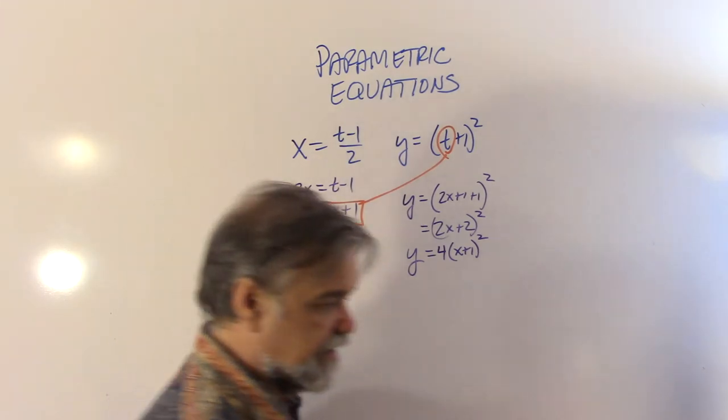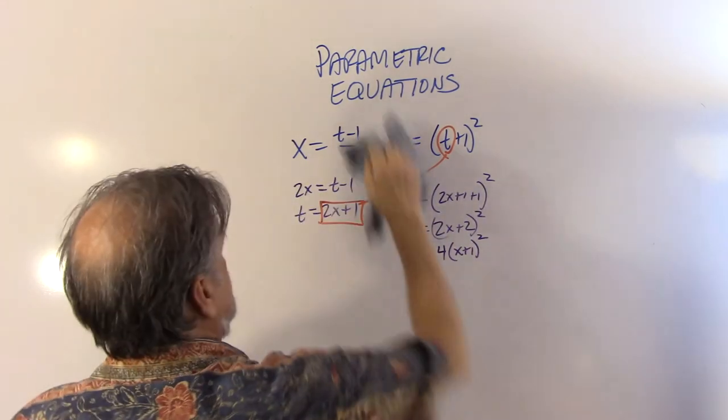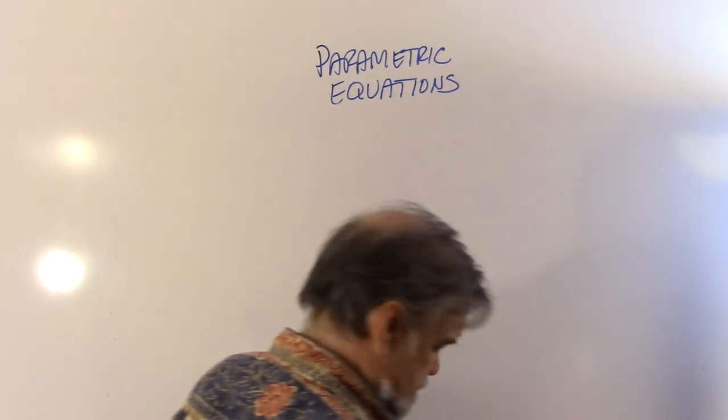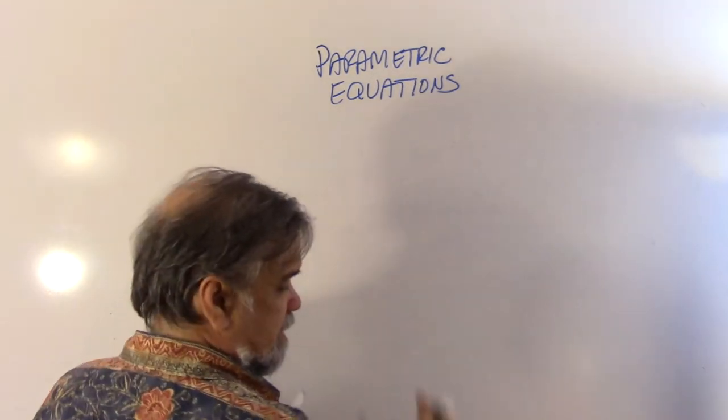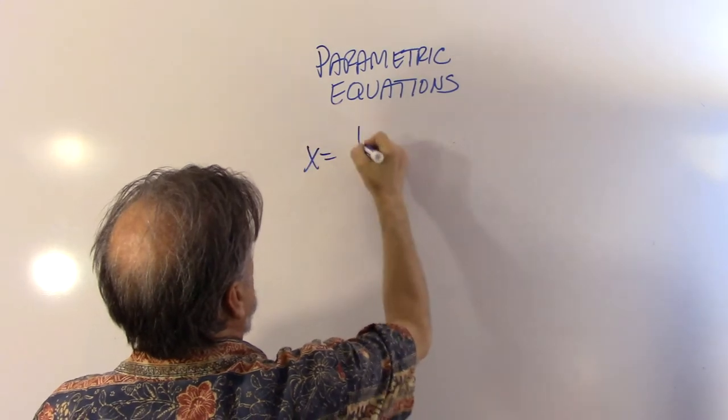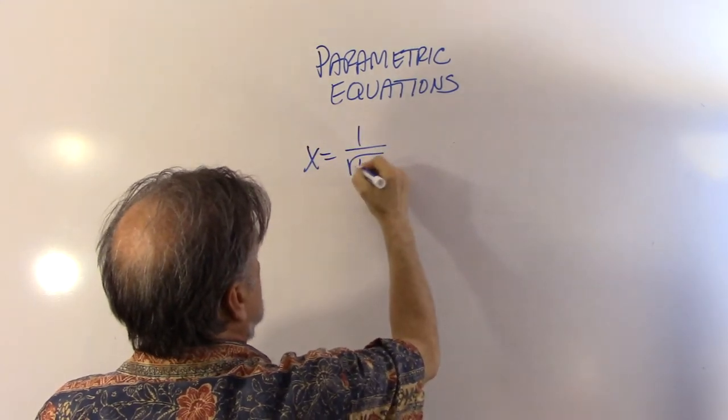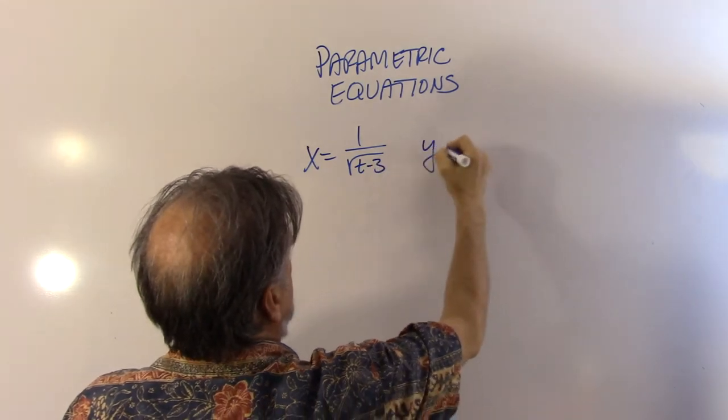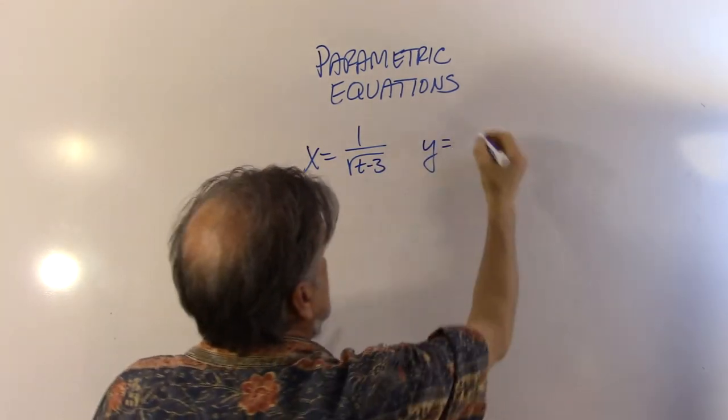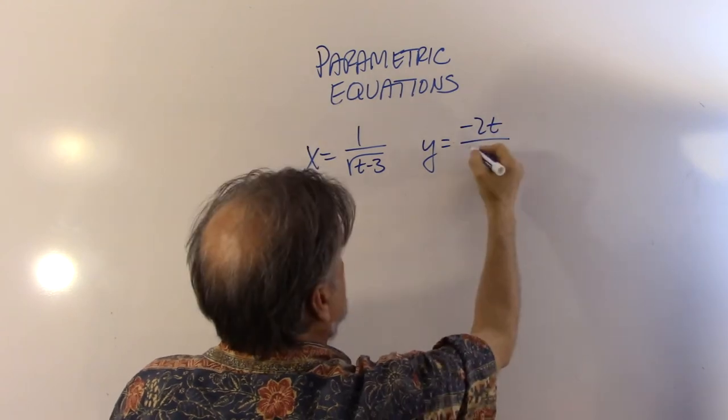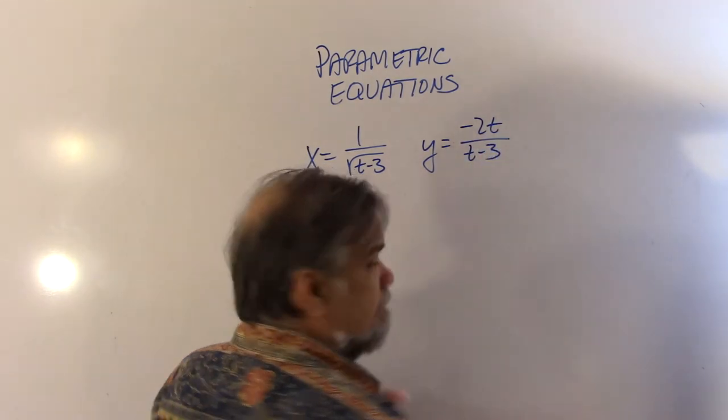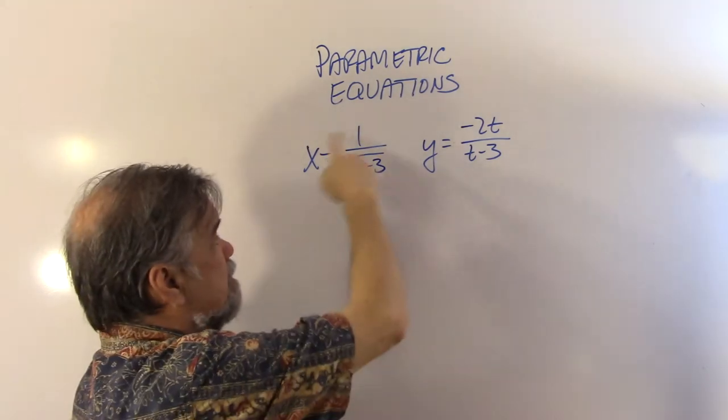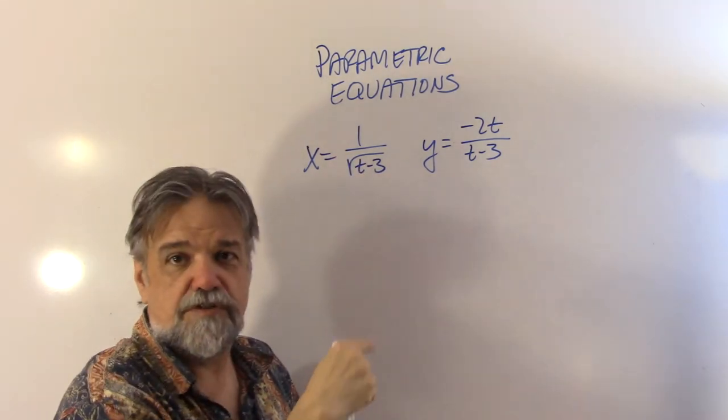All right. Well, that was easy enough. Let's take a look at another one. Let's say I have x equals 1 over the square root of (t minus 3). And y equals negative 2t over (t minus 3). Do the same thing. Take this equation here, solve for t.